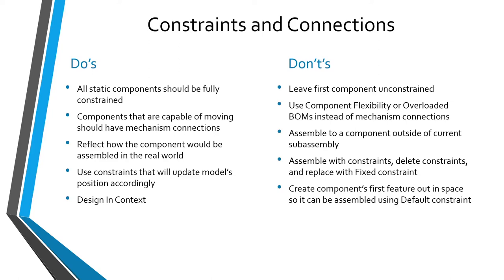Any components capable of moving should have mechanism connections — pin, slider, cylinder, planar, ball, bearing, and so forth — reflecting the available degrees of freedom. A corresponding don't: instead of using mechanism connections, some people use component flexibility with different dimensions reflecting positions like fully closed or fully open. Another bad habit is using an overloaded bill of materials — having a component assembled twice, once in the initial position and once in the final position. Don't do that because it really screws up your bill of materials.